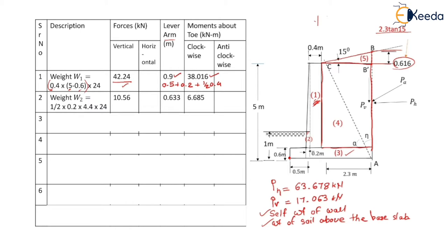Weight W2 is the weight of the triangular portion of the stem, equal to half into base 0.2 into height 4.4 (which is 5 minus 0.6) into density 24, so W2 equals 10.56 kN. The lever arm equals 0.5 plus two-thirds of 0.2, giving 0.633 meter. The clockwise moment is 10.56 into 0.633, equal to 6.685 kN·m.